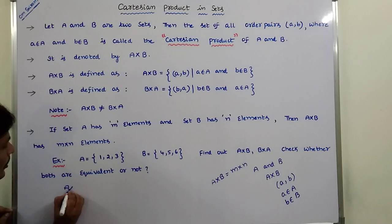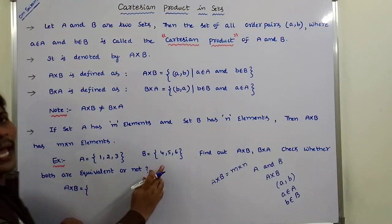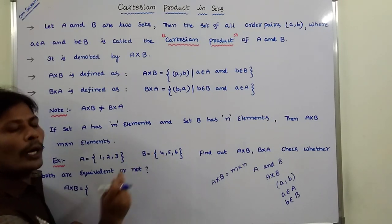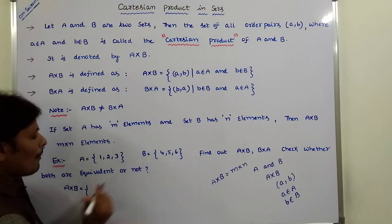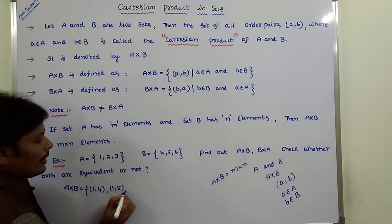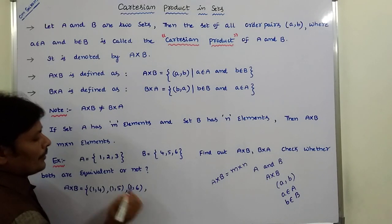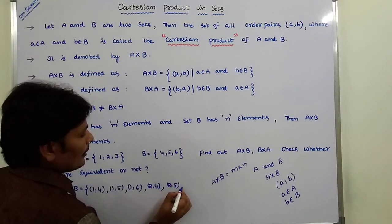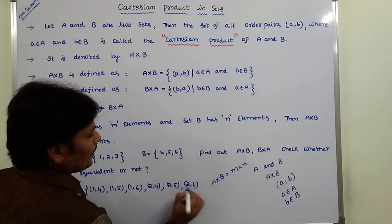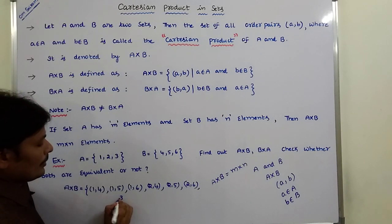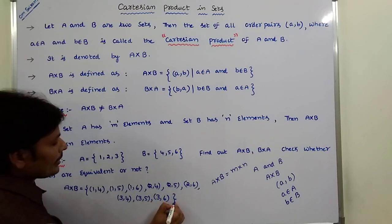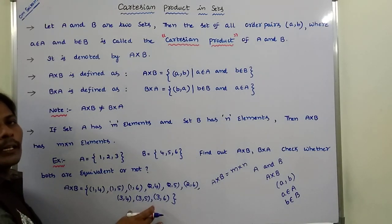A cross B is equal to — we form ordered pairs where the first coordinate belongs to set A and the second coordinate belongs to set B. So A cross B is: (1,4), (1,5), (1,6), (2,4), (2,5), (2,6), (3,4), (3,5), (3,6). These are the 9 ordered pairs present in A cross B.